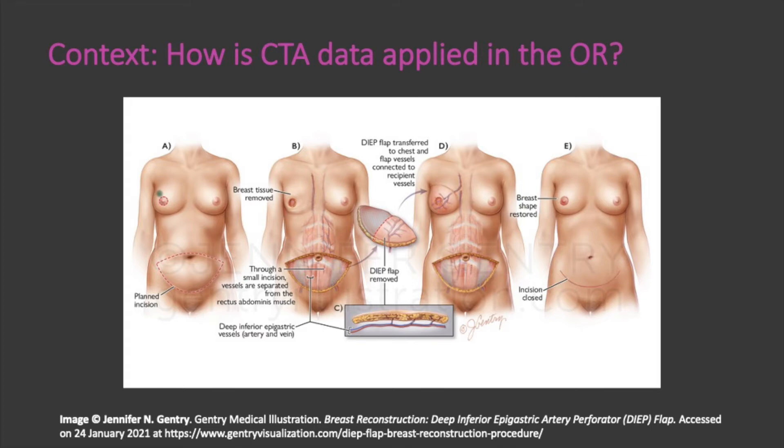After the perforators have been located and dissected down to the DIEA, a perforator angiosome is estimated based on CTA data. Any areas with poor perfusion are trimmed away and discarded. A number of additional steps occur, including recipient site preparation, microsurgical anastomosis, and flap inlay at the breast. Finally, during closure of the donor site, any weak points in the abdominal wall, as noted in CTA or during surgery, can be reinforced.